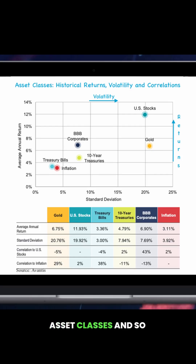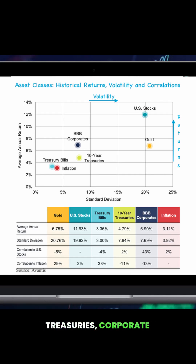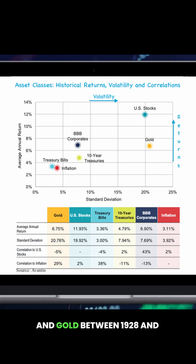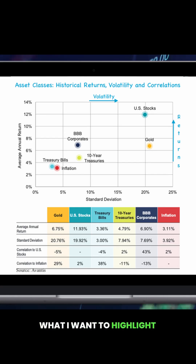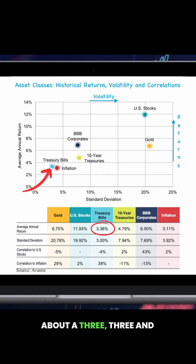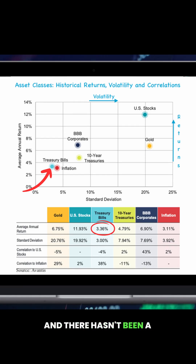This takes a look at asset classes — treasury bills (three-month and six-month treasuries), corporate bonds, long-term U.S. treasury bonds, U.S. stocks, and gold — between 1928 and today. The vertical axis measures average annual return, and right to left measures volatility, called standard deviation. Treasury bills have kept pace slightly above the roughly 3 to 3.5% inflation rate for much of that time, with very little volatility.